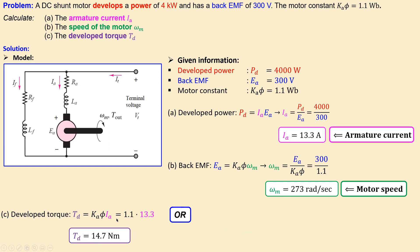But you can also do that in a different form. The torque itself is also related to the developed power. So the developed torque is equal to developed power over the motor speed. If you use the given values and also what we have just calculated in question b, you will have again 14.7. So it doesn't matter which formula you are using.